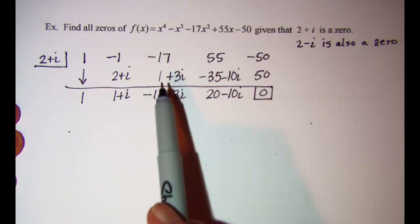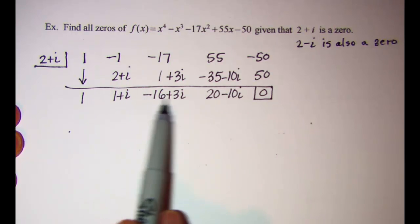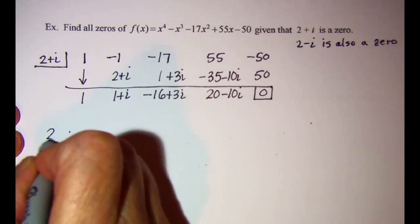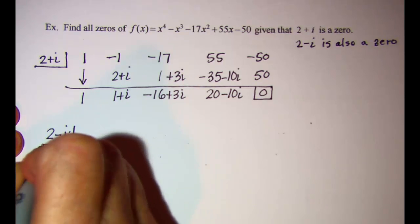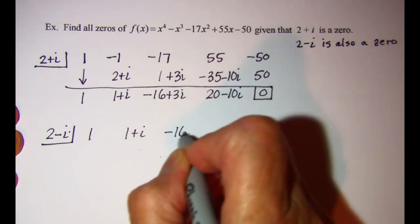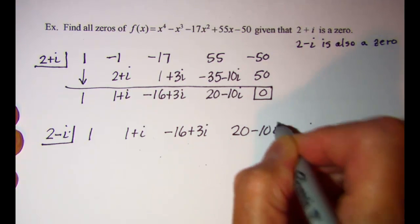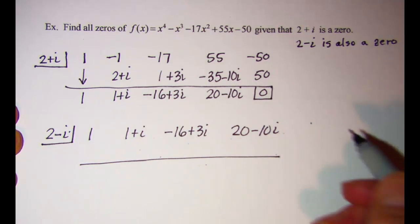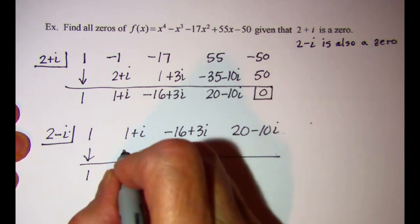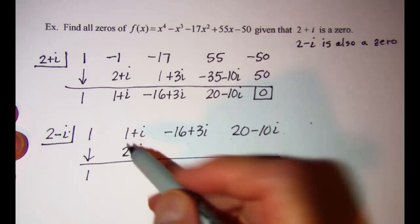Now I can divide by 2 - i. I can use these numbers. I don't have to use the original function. So 2 - i, and I'm going to use 1, 1 + i, -16 + 3i, and 20 - 10i. Write down my first number. 1 times 2 - i is 2 - i. And when I add here, the i's cancel and I have 3.